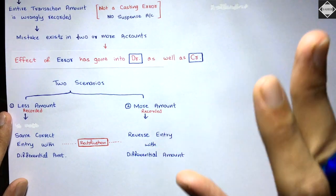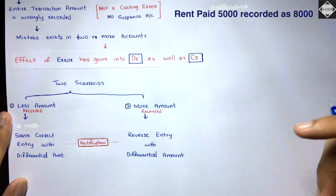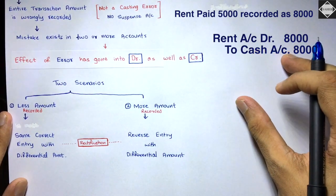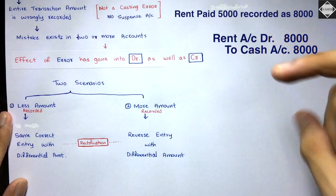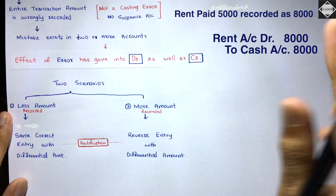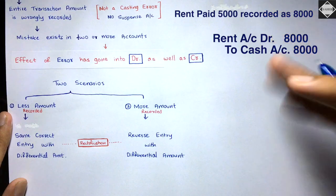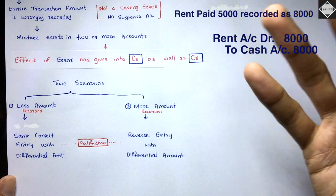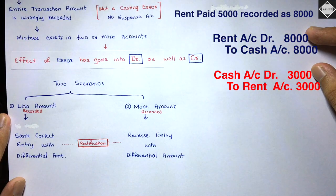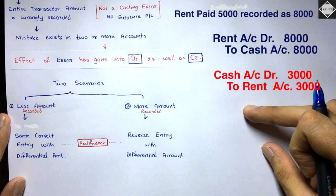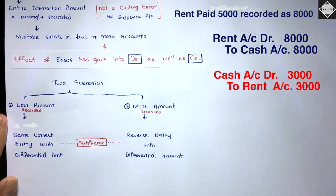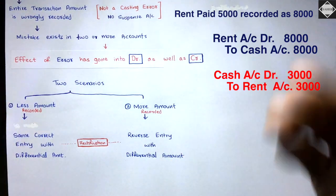The second scenario: more amount is recorded. Say rent paid five thousand was recorded as eight thousand — rent account debit to cash eight thousand, which is the wrong amount. What you do is reverse the entry with the differential amount. Recorded is eight thousand, correct is five thousand, differential is three thousand. So pass: cash account debit to rent account, three thousand. The expense is reversed by three thousand and cash balance increases by three thousand.